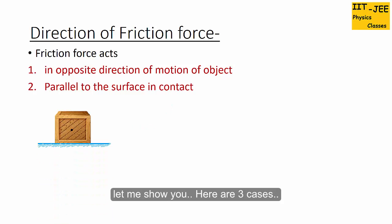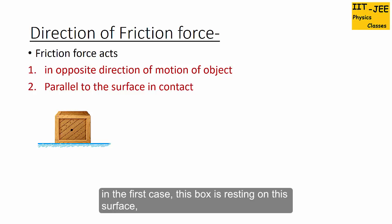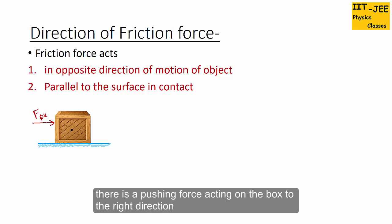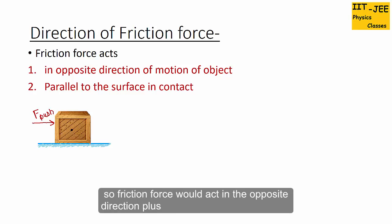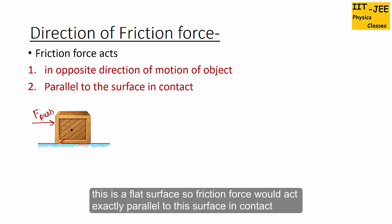There are three cases. In the first case, a box is resting on a flat surface with a pushing force to the right. Friction force acts in the opposite direction of that force and is exactly parallel to the flat surface in contact — labeled FF.